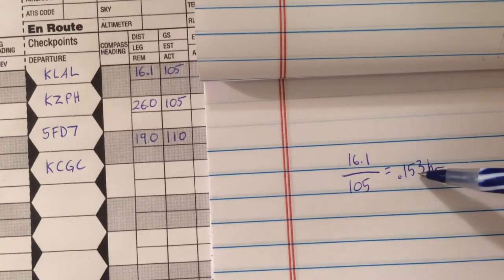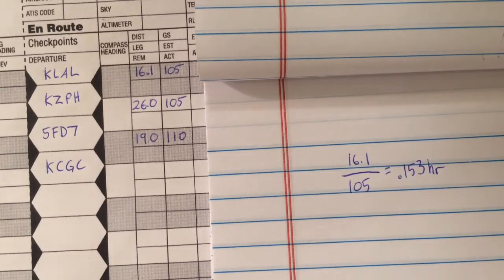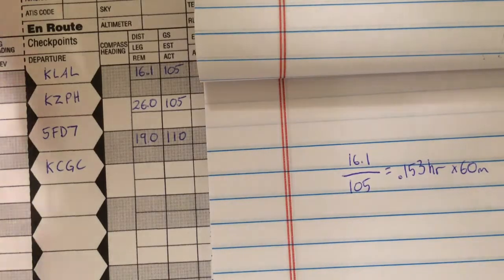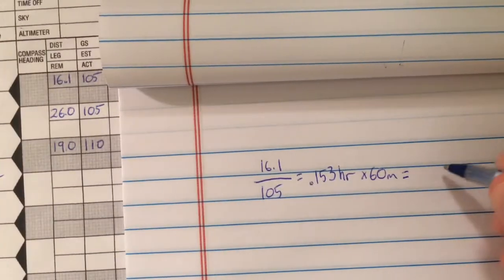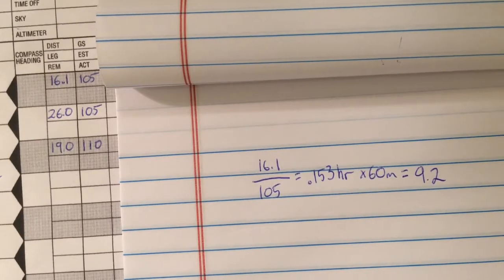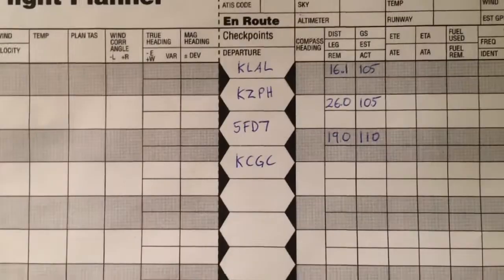So it would take you 0.153 hours to travel 16.1 nautical miles, and multiplying that by 60 minutes gives us our amount of time in minutes, which is equal to 9.2. So it's pretty fast using math, but it's faster using the E6B, as I will demonstrate.